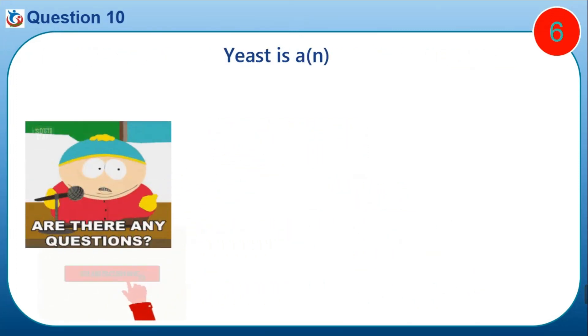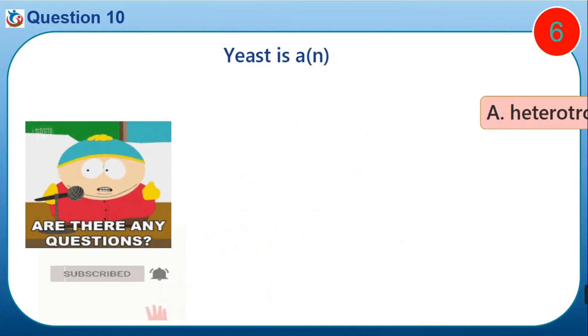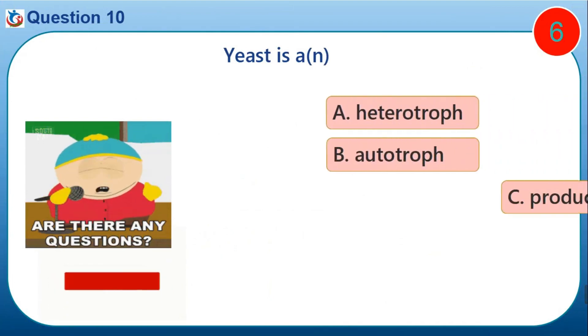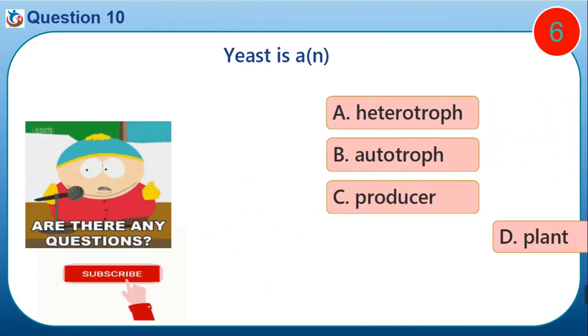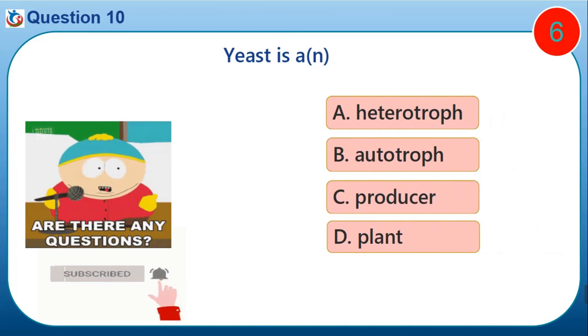Question ten: yeast is — A) a heterotroph, B) an autotroph, C) a producer, D) a plant.